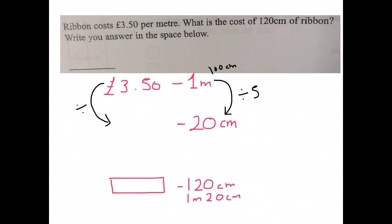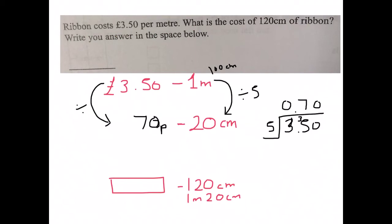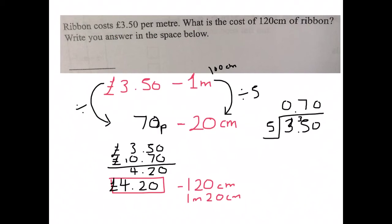So £3.50 divided by five: five into three does not go, five into 35 goes seven times, and five into zero is zero. So 20 centimetres of ribbon will cost 70p. You already know one metre costs £3.50, and 20 centimetres is 70p — add them together: five and seven are 12, one over. £4.20 is the cost of 120 centimetres of ribbon.